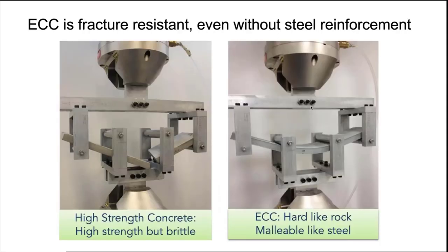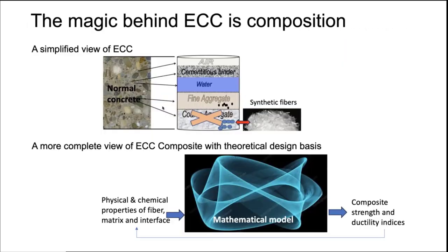If you put the material under bending, you can actually bend it, as shown on the right-hand panel. In contrast, if you bend a piece of normal concrete without steel reinforcement, it simply fractures into two pieces. This material has the possibility of decreasing the amount of steel reinforcement and, in some cases, possibly eliminating steel reinforcement entirely.